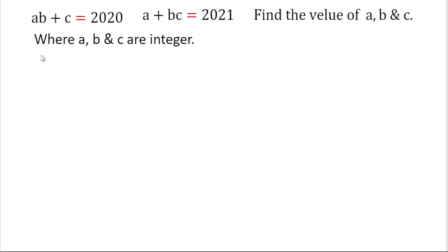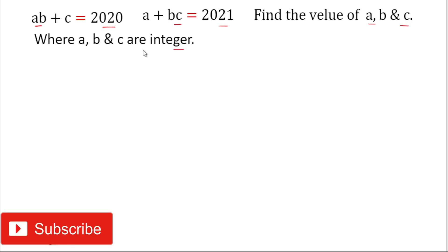Hello friends, welcome back again to my YouTube channel. Today in this video we are going to solve this interesting algebraic problem. The given problem is: ab + c = 2020 and a + bc = 2021. Find the value of a, b, and c, where a, b, and c are integers. Please subscribe to my channel and do not forget to give a thumbs up to the video.